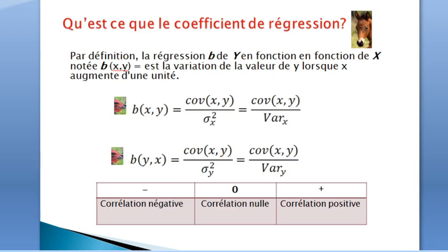The coefficient of regression B of Y on X is the change in the value of Y when X is one unit higher. It is given by the formula: covariance XY over variance X. It is also possible to calculate the change in X when Y is one unit higher: B of X on Y is given by covariance XY over variance Y.